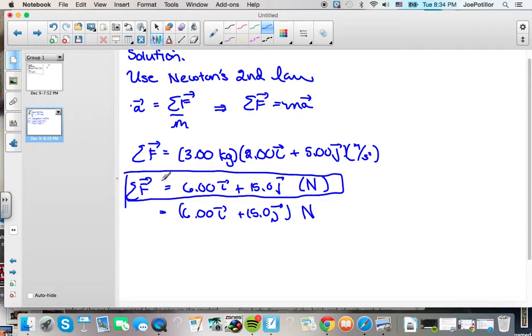It looks cleaner the other way, so we'll leave it like that. So that's the answer. In part A, we just multiply the 3 times 2 and the 3 times 5.